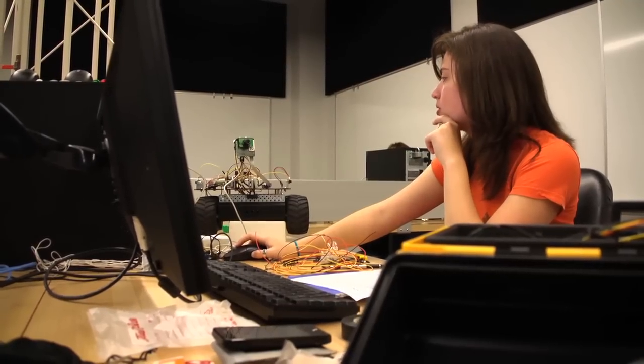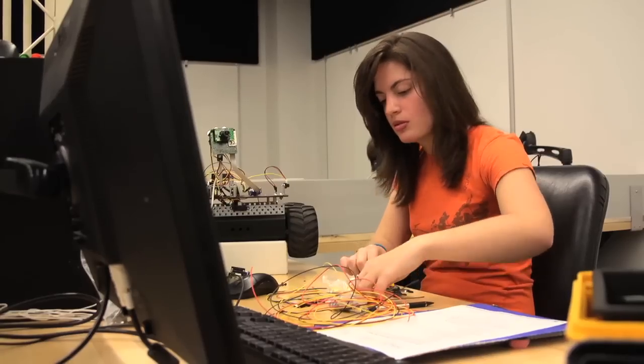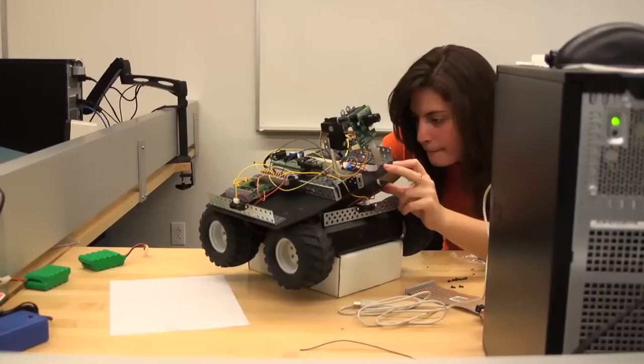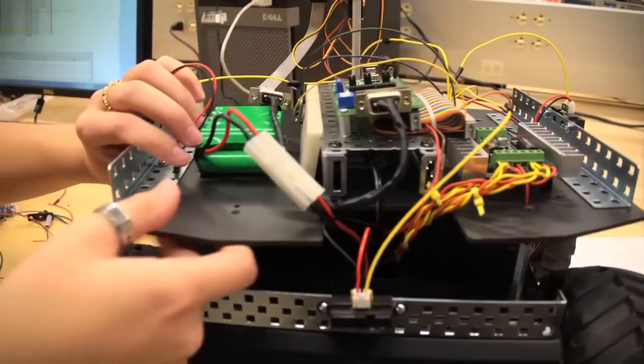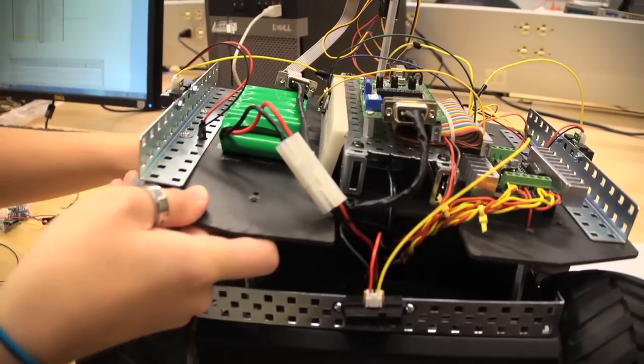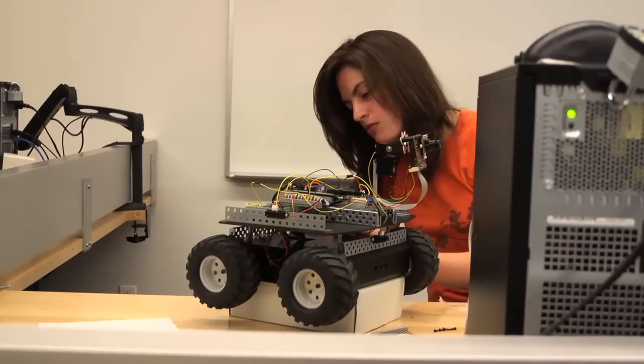My project is an autonomous color tracking robot. Autonomous meaning that it doesn't have a remote control. Nothing is controlling it except for itself. Color tracking, basically it will follow a specific color that you choose. In this case, I chose red and then robot is just the thing that goes along with it.